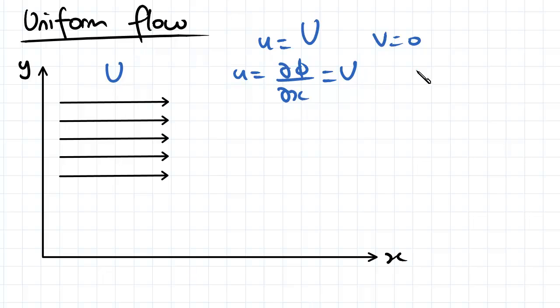We also know that v, which is our velocity component in the y direction, is equal to the partial derivative of our velocity potential function in terms of y, and in this case that's equal to zero. So simply by integrating for the velocity potential function, what we find is that our velocity potential is equal to Ux plus c.